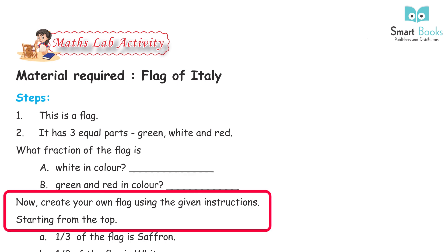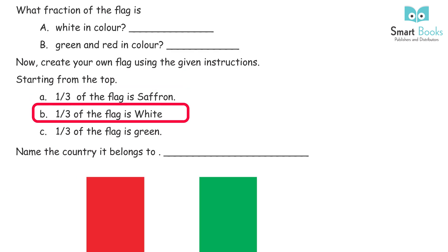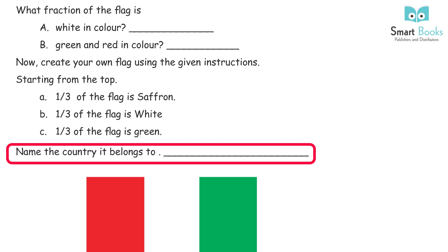Now create your own flag using the given instructions, starting from the top: A) one upon three of the flag is saffron, B) one upon three of the flag is white, C) one upon three of the flag is green. Name the country it belongs to.